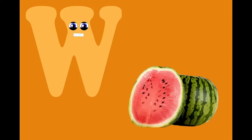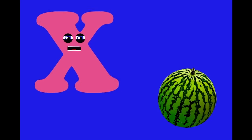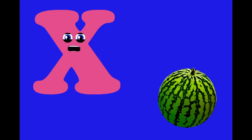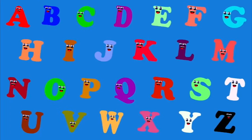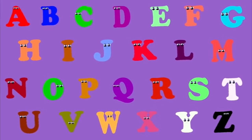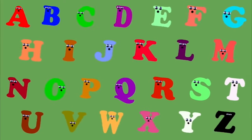U — ugly fruit. V — vanilla. W — watermelon. X — xylocarp. Y — youngberry. Z — zucchini. This is a fruit phonics song, so come and sing along. Eat your fruit every day and you will grow real strong.